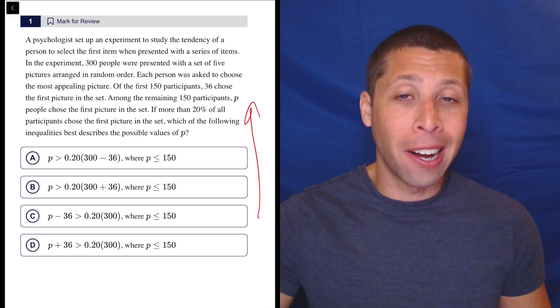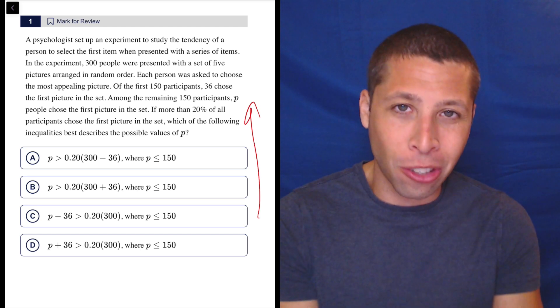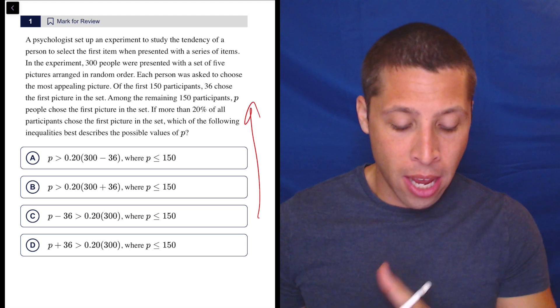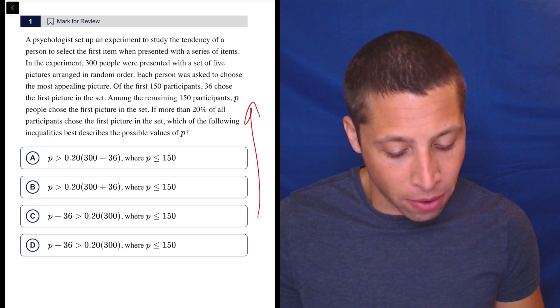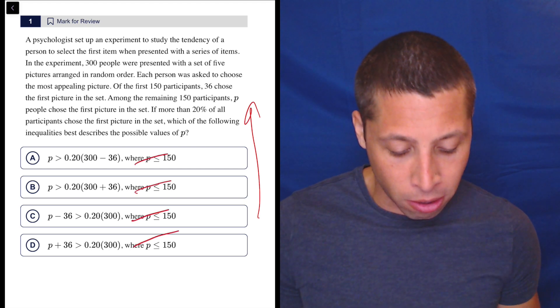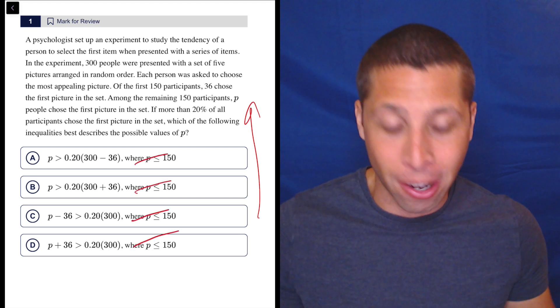And then hopefully one of these choices will kind of have an answer somewhere in the passage. So the first thing I notice is actually that this 'where P is less than 150' doesn't matter, right? Because it's in all the choices. So who cares? It's just there for distraction purposes.